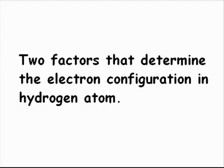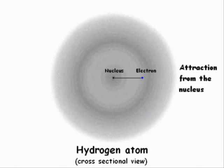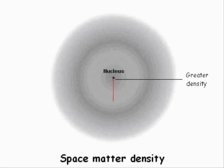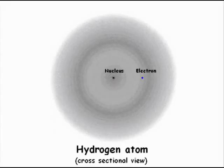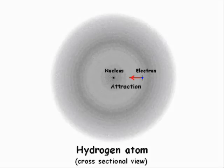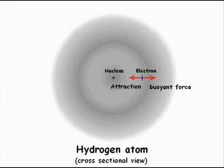There are two factors that determine the electron configuration in a hydrogen atom: the attraction from the nucleus and the buoyant force exerted by space matter. The density of space matter is greater near the surface of the nucleus and decreases with increasing distance from the nucleus. The electron in a hydrogen atom is situated in the region where the attraction from the nucleus is neutralized by the buoyant force exerted by space matter.